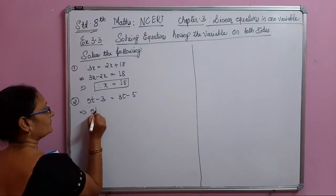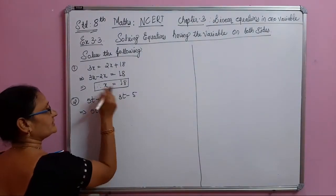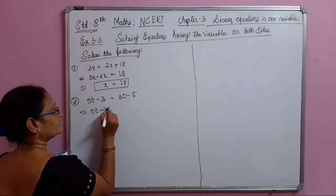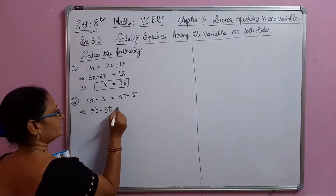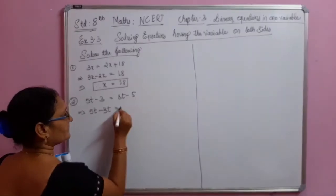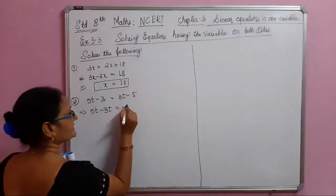Using the same transposing method: 5t, and 3t comes to this side as minus 3t. The minus 3t goes to the other side.